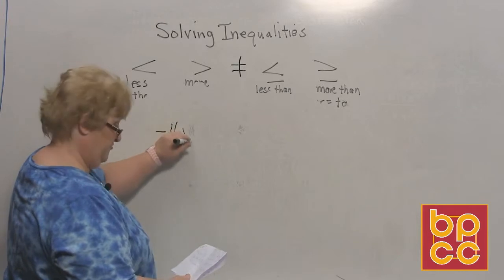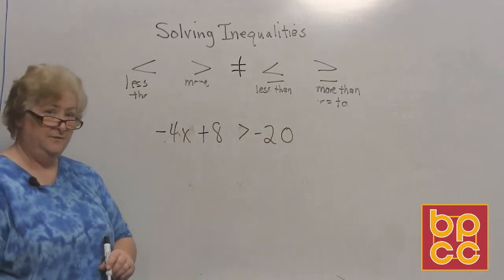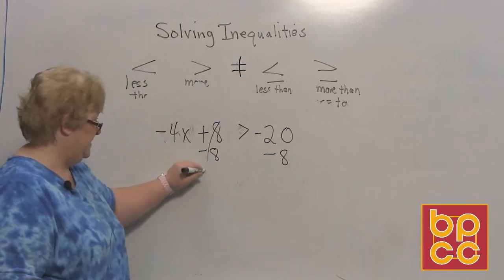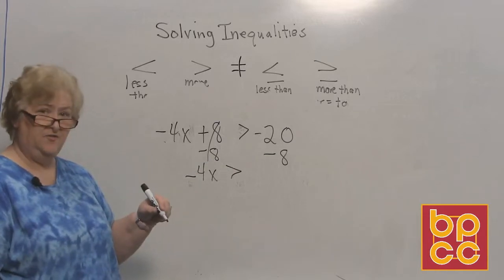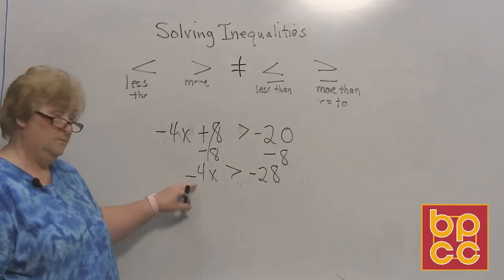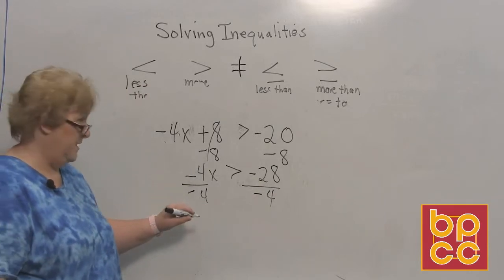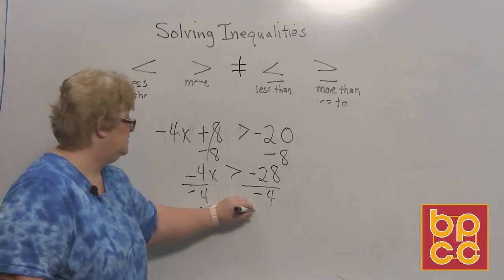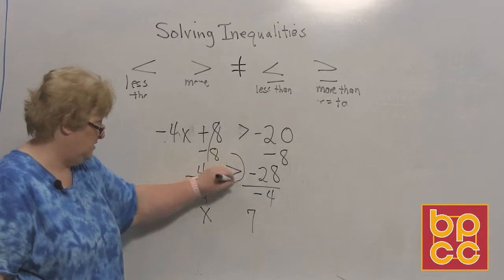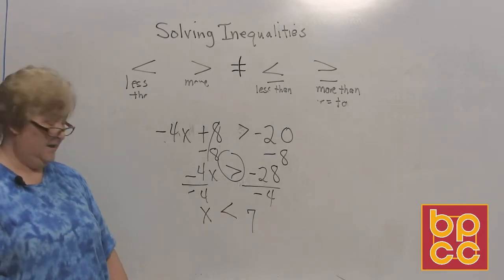Let's try: negative 4x plus 8 is greater than negative 20. Move the 8 by adding a negative 8 to clear it. We have negative 4x is greater than negative 20 minus 8, for a total of negative 28. Now divide both sides by negative 4. A negative into a negative makes a positive. Since we divided by a negative, we change the direction of the sign. So x is less than 7.